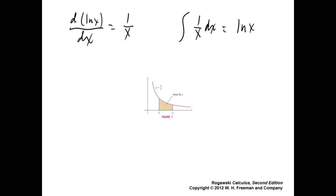That would be the log of x evaluated from a to b, and that would be log b minus log a. Technically, I should be putting absolute values here, because you want to make sure those are positive numbers. You can't take the natural log of a negative number or zero.